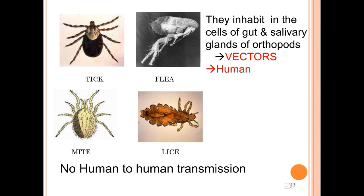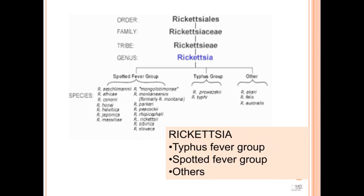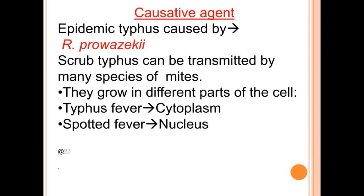There is no human to human transmission. Rickettsia can be divided into three different groups: the typhus fever group, the spotted fever group, and others. The causative agent of epidemic typhus is Rickettsia prowazekii. Scrub typhus can be transmitted by many species of mites. They grow in different parts of the cell: typhus fever in the cytoplasm and spotted fever in the nucleus.